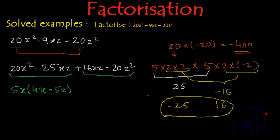And from these 2 factors we can take 4z common and inside the bracket we will have 4x minus 5z.